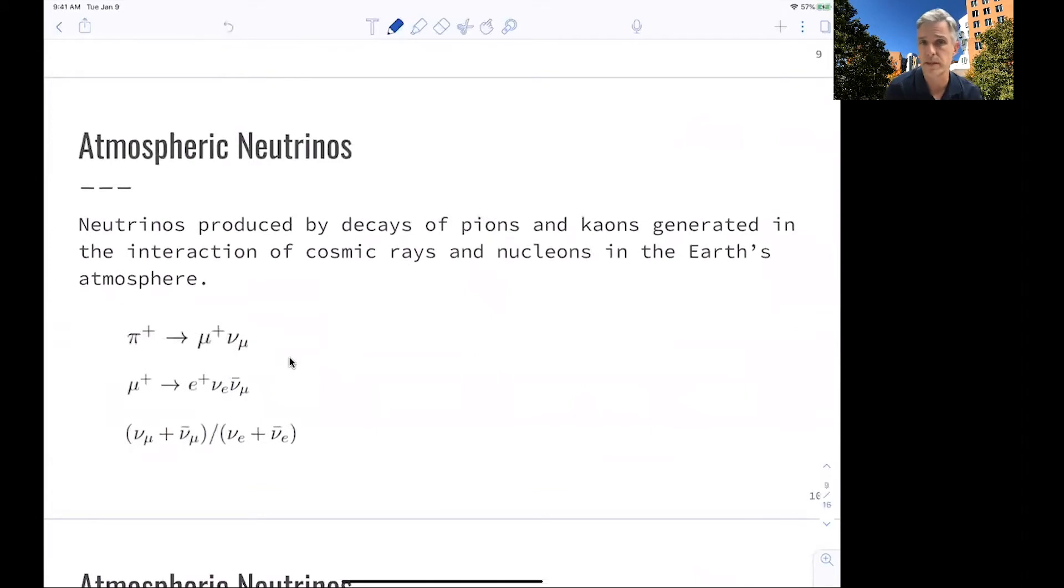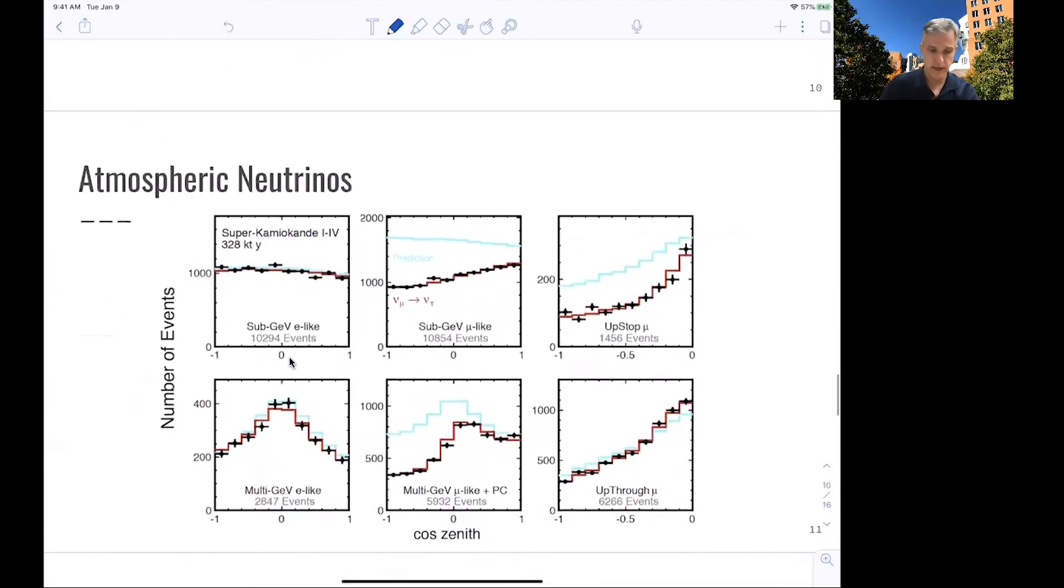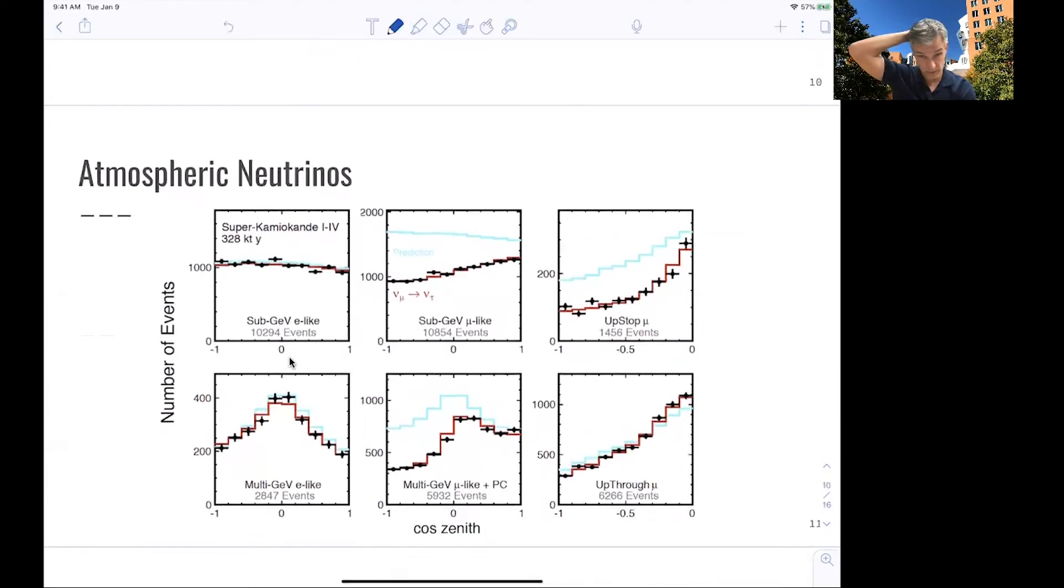The next source of neutrinos is the ones which are produced in the atmosphere. So they are produced in the decay of pions and kaons, and the cosmic rays interact with the Earth's atmosphere. And so you find, for example, a pi plus decaying into a muon and a muon neutrino. And then the muon itself can decay into an electron, an electron neutrino, and a muon anti-neutrino. So if you, for example, build the ratio of muon and anti-muon over anti-electron neutrinos, you find it should be around 2. So you have muon neutrinos here and an electron neutrino.